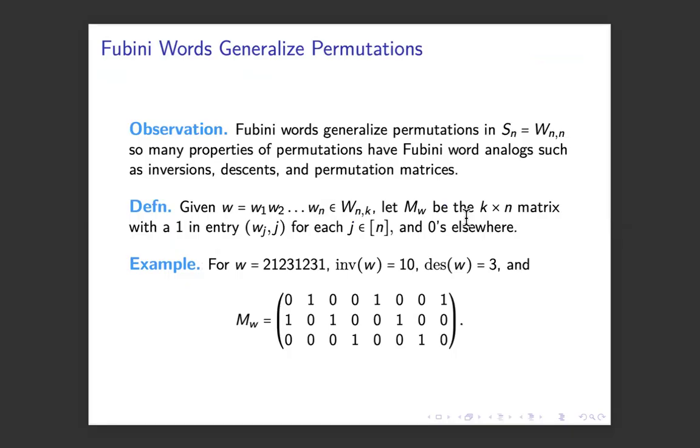The Fubini words generalize the set of permutations S_n. It's just that the alphabet is 1 through n and the length is n, so W_{n,n} is S_n. Many of the properties of permutations carry over to these Fubini words, like inversions. You could ask for descents, or you could even ask for something like the permutation matrices. If you're given a Fubini word W_1 through W_n, let's make the corresponding matrix be M_W. It'll be a k by n matrix.